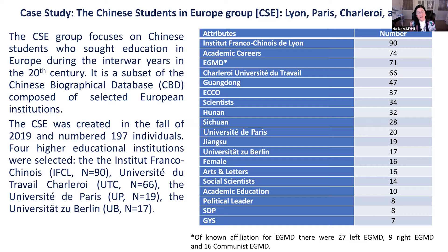The Chinese Students in Europe dataset was created in fall 2019 and numbers 197 individuals. Primarily, there are 90 people from the Institut Franco-Chinois, 66 from the Université du Travail in Charleroi, 19 from the University of Paris, and 17 from the University of Berlin. About 10% of the dataset are women — usually it is 7 to 10%. One characteristic is that unlike other datasets I study, which have a preponderance of Communist affiliation, this one has a strong European Guomindang affiliation — 71 out of 197 individuals.